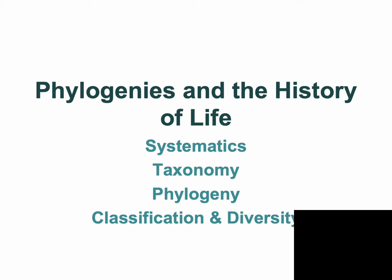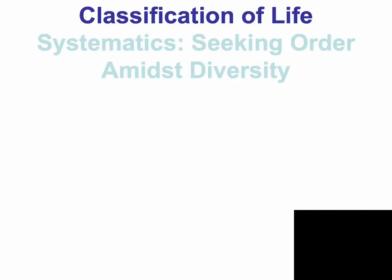This will be a brief overview of classification and diversity of life. When talking about the classification of living things, scientists use the science of systematics to show how the biodiversity of all living things is organized and classified. Systematics also has branches of taxonomy and phylogeny to help further explain how all living things are classified. So let's start with talking about systematics.